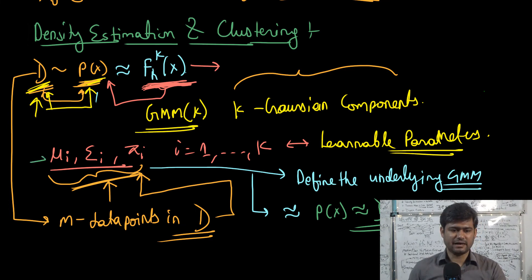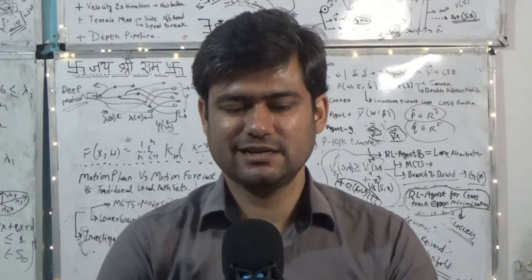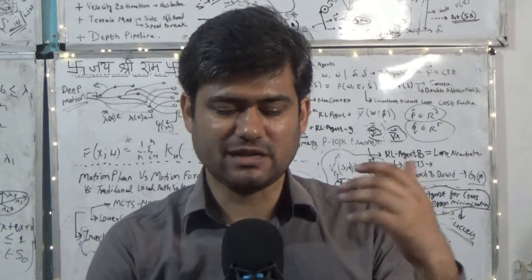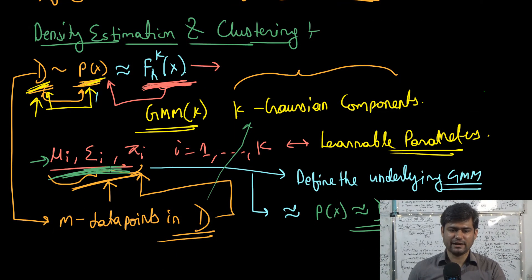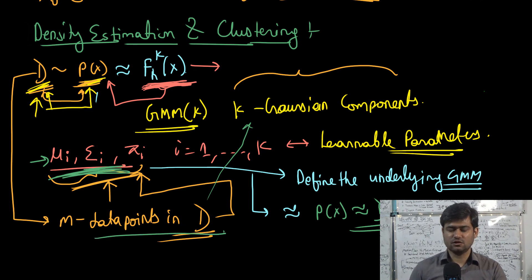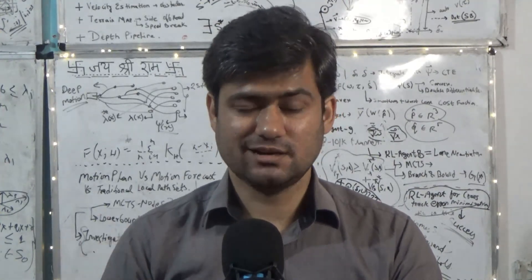By learning these parameters we effectively learn the Gaussians, and by doing so we can associate every data point in the dataset with one of the Gaussian components, effectively clustering the dataset. The mathematical steps in the GMM algorithm allow us to learn the parameters mu_i, sigma_i, and pi_i — where mu is the mean vector, sigma is the covariance matrix, and pi are the mixing coefficients. By learning these parameters from dataset D, we find the Gaussian components, identify the clusters, and associate every data point with one of them, effectively clustering the dataset.